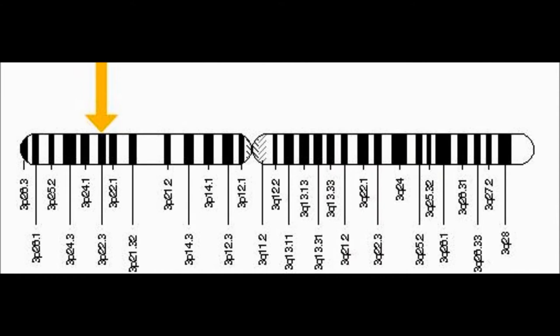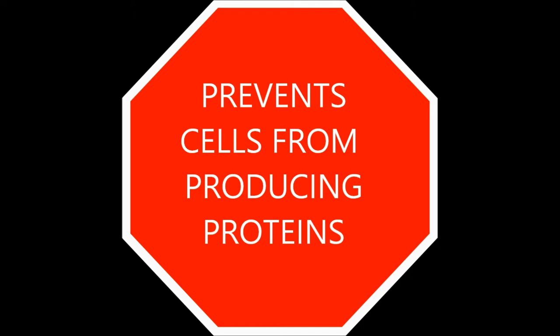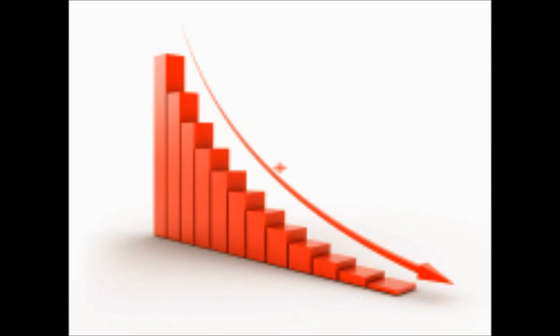The CRTAP gene makes a protein called cartilage-associated protein, which is important for bone development. This protein is critical for the normal folding and assembly of collagen, and may also be important for releasing collagen molecules into the spaces around cells. CRTAP mutations cause type 7 of OI. These mutations prevent cells from producing cartilage-associated protein, leading to improperly formed tissues and bones that exhibit severe symptoms of OI. Another mutation reduces the amount of cartilage-associated protein produced, disrupting normal collagen formation and causing less severe problems in comparison.